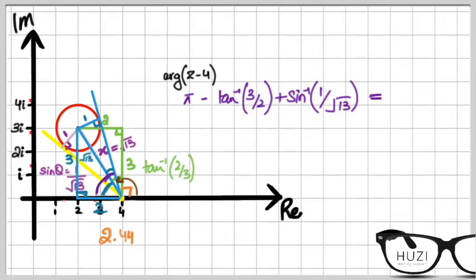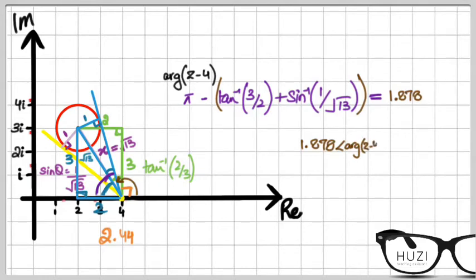So this angle is going to be 1.878. Subtract the angle you find from π and you get this answer. The range of possible values for the argument of z minus 4 is going to be 1.878 to 2.440. Sorry for the dirty diagram, but if you watch it closely and try to solve it along the way, it should be easy to understand. I hope you understood how to sketch the angle loci and the relative questions. This is all about angle loci. In the next video we will talk about how to sketch the perpendicular bisector loci in complex numbers.